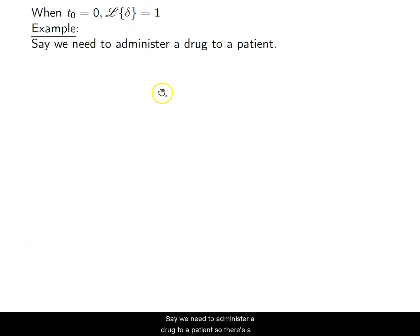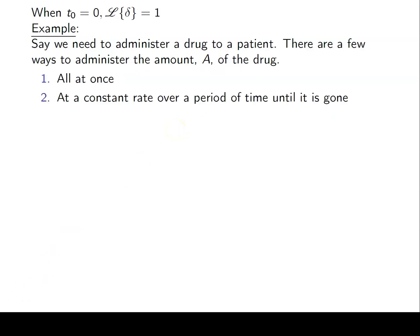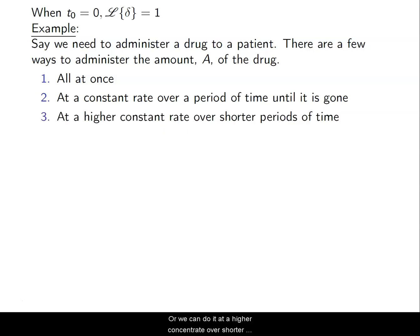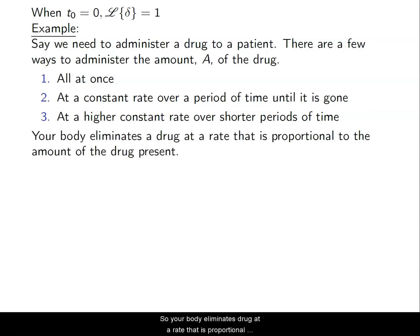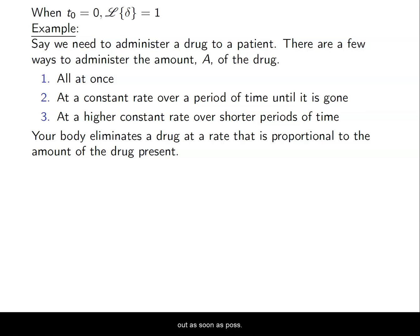Let's do an example. Say we need to administer a drug to a patient. There are a few ways doctors can administer a drug of amount A: all at once, at a constant rate over a period of time until it's gone, or at a higher constant rate over shorter periods of time. Your body eliminates a drug at a rate proportional to the amount present — like alcohol: if there's little in your system, it dissipates slowly; if there's a lot, your body flushes it out quickly.